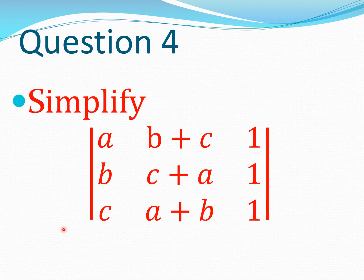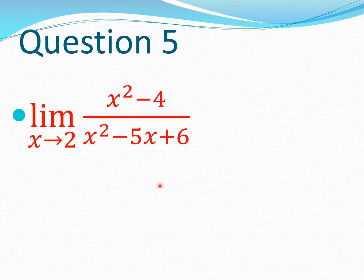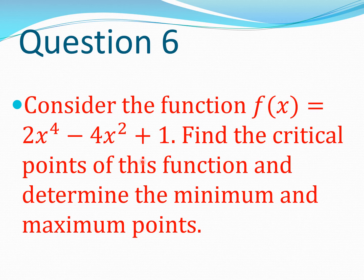Question number four asks you to simplify a determinant where a, b, c are constants and you have to reduce it to the simplest possible form. Question number five is a problem involving limits: you have x squared minus four divided by x squared minus five x plus six, and you have to find the limit of this function as x tends to two. Question six gives a particular function f(x) and you have to find the critical points of this function.